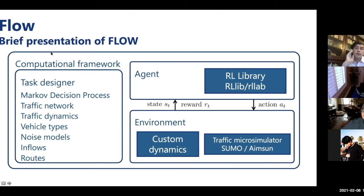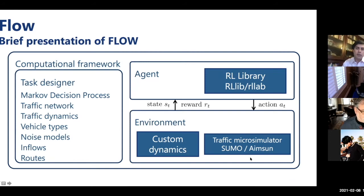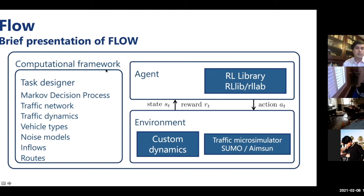The framework we built about three or four years ago—which you can download from our website—integrates both SUMO and AIMSUN: SUMO being the open-source microsimulator and AIMSUN being the commercial version now owned by Siemens. It runs on AWS and calls state-of-the-art libraries like RLlib and RLlab. We were the first case study of AIMSUN on the cloud when it moved to a cloud-compatible architecture about three and a half years ago. SUMO runs on AWS almost by design, so the full framework including SUMO is fully open source.